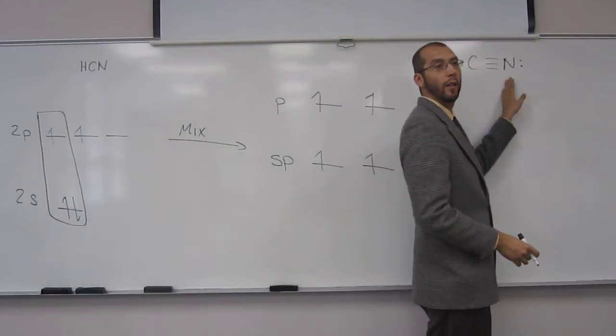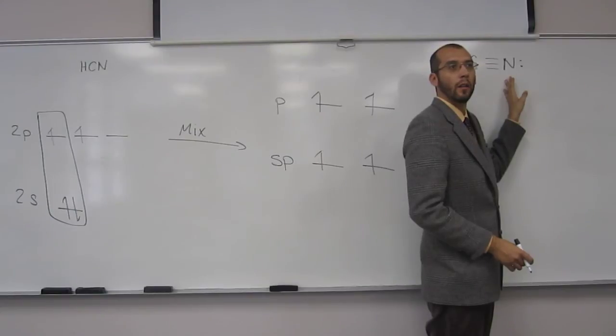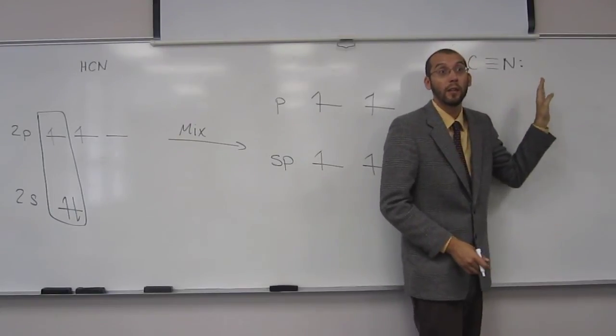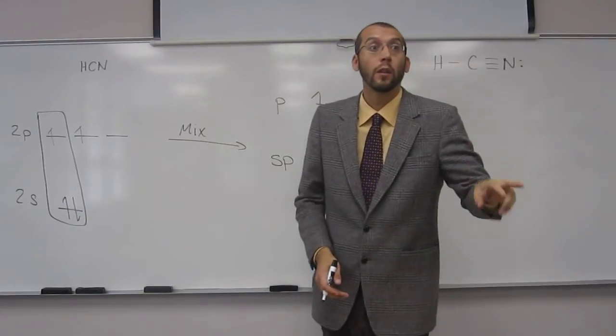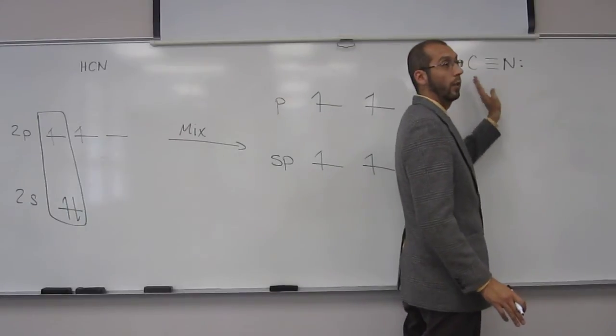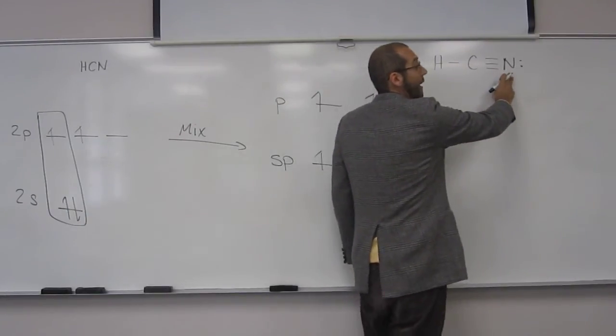So the s orbital is going to bond with one of these sp orbitals in carbon. Nitrogen, what is the hybridization of nitrogen in this molecule? It's sp, because there's how many electron groups? Two, right? Okay, so the electron geometry is, if you think, linear, you know?